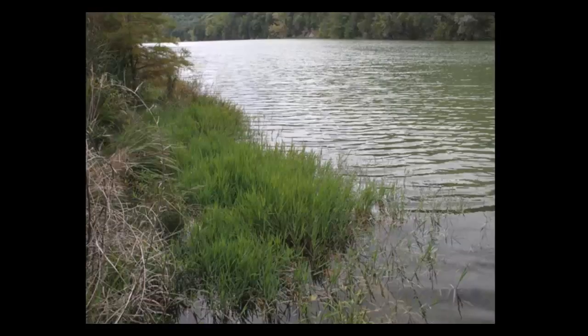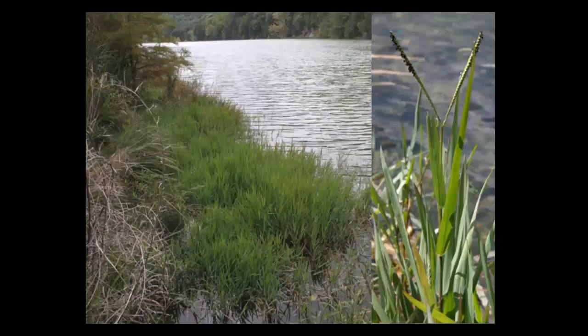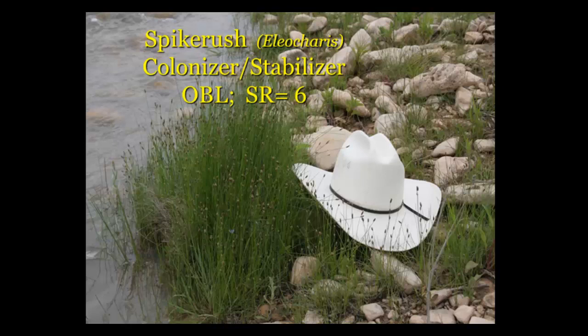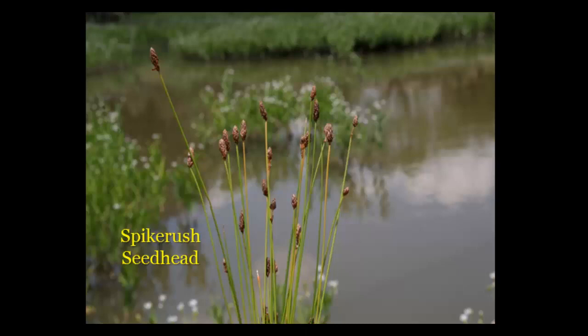There's what the seed head of knotgrass looks like — it's a V-shaped seed head. And then there's another type of plant we call spike rushes. There are many kinds of spike rushes in Texas, and they're also sort of this hybrid of colonizer and stabilizer — notice the high mid-range stability rating. Most spike rushes are obligate.